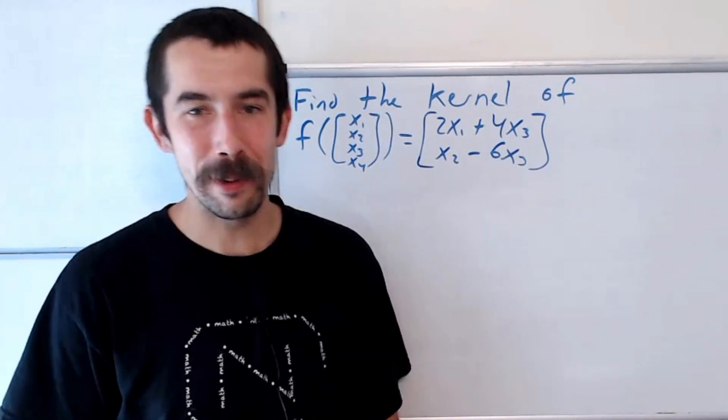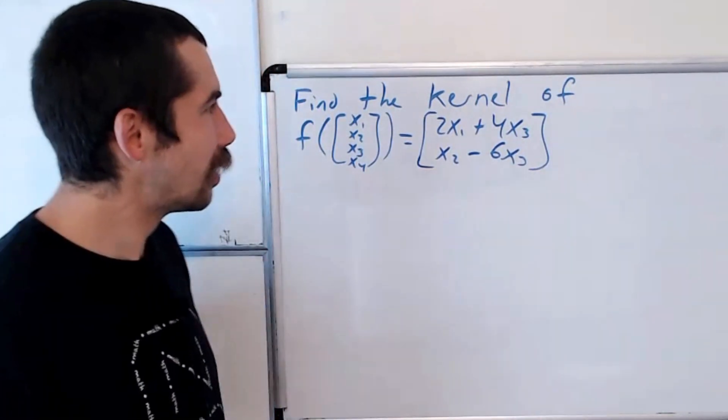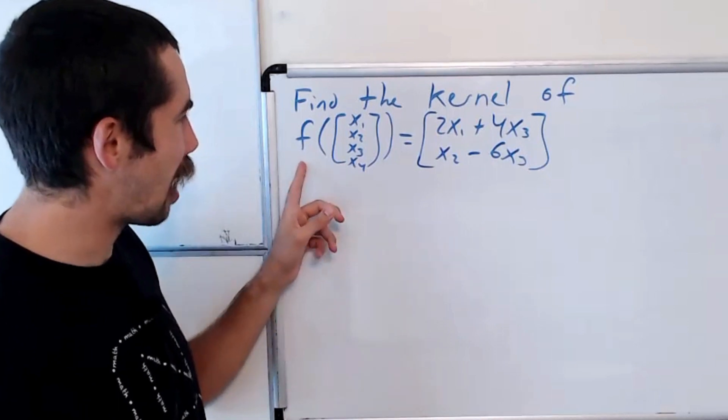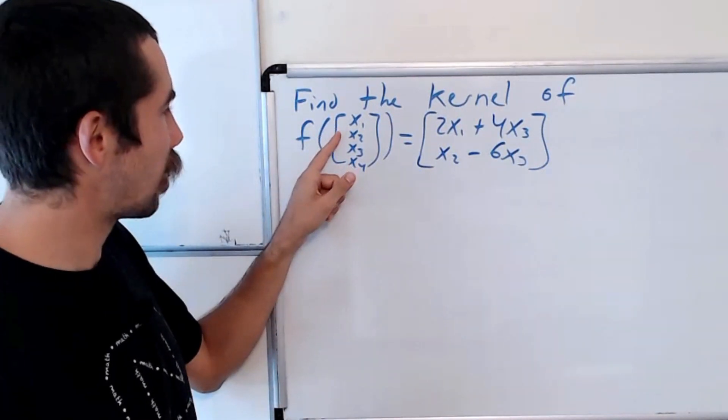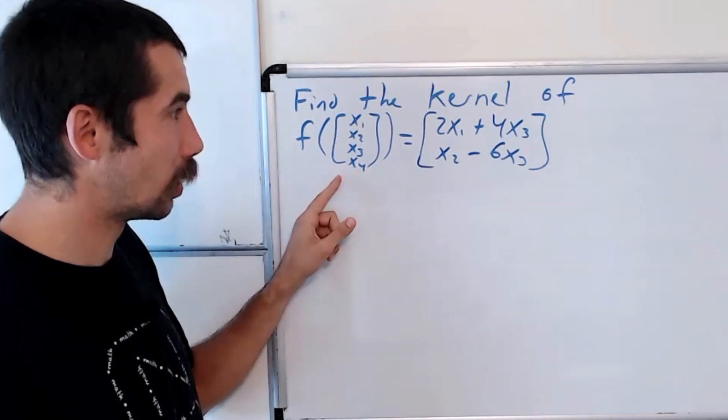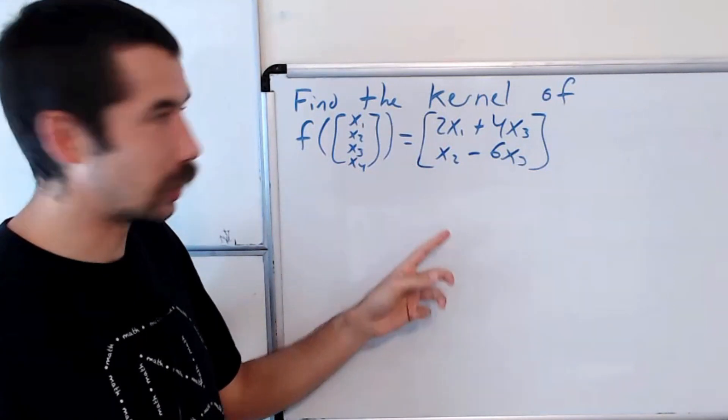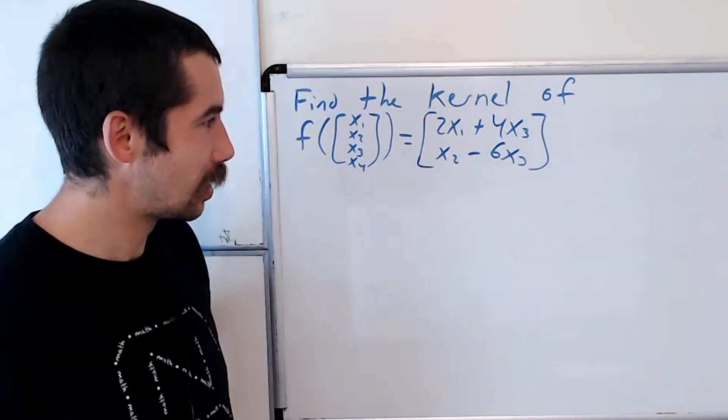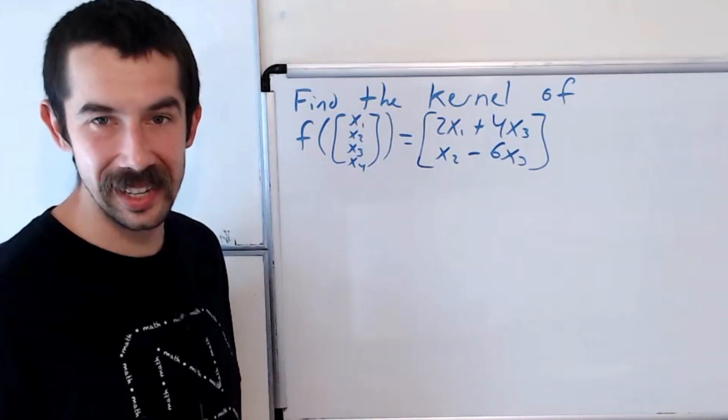Happy learning! We got a quick one today. Find the kernel of the function f, which maps x1, x2, x3, x4 to the vector 2x1 plus 4x3, x2 minus 6x3.